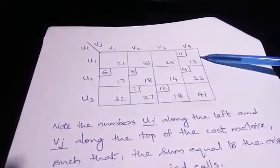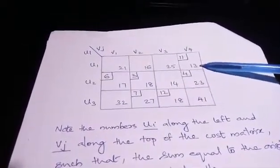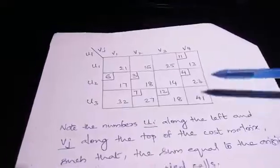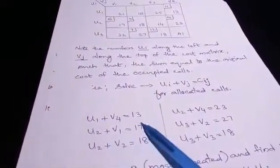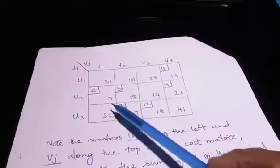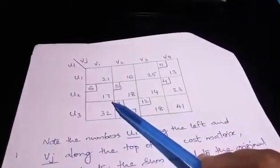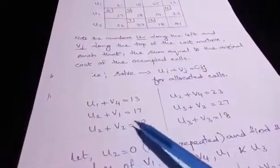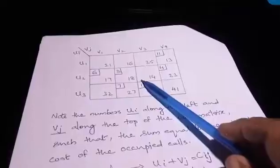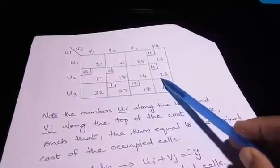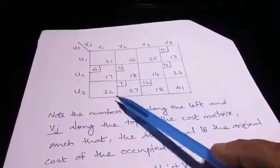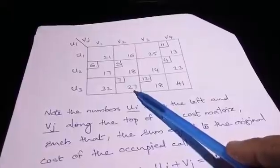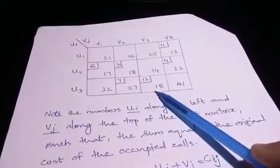Substituting the allocated cells into the formula: u1 plus v4 equals c14, which is 13. u2 plus v1 equals 17. u2 plus v2 equals 18. u2 plus v4 equals 23. u3 plus v2 equals 27. u3 plus v3 equals 18.